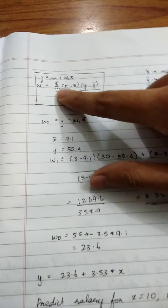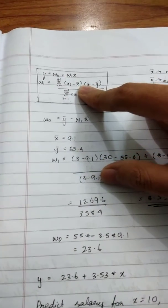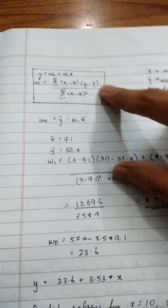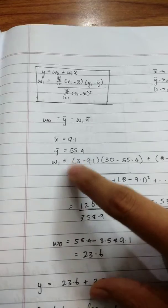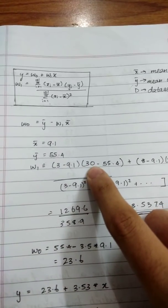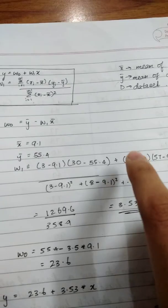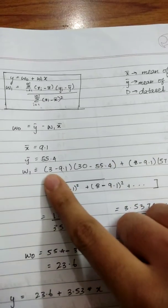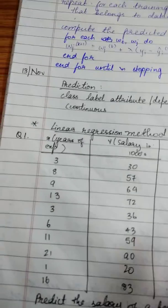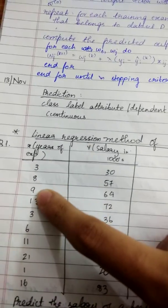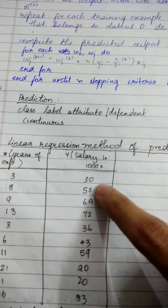In W₁, you need to take the summation of all X values minus X mean times all Y values minus Y mean. The X values are 3, 8, and 9, and the Y values are 30, 57, and 64.